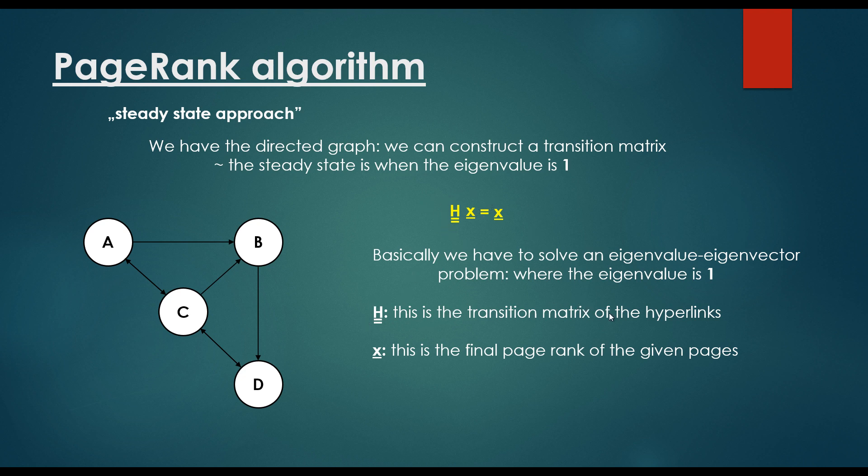Where h is the transition matrix of the hyperlinks that we have constructed out of the topology of the world wide web, and x is the final page rank of the given pages. This is the steady-state approach.